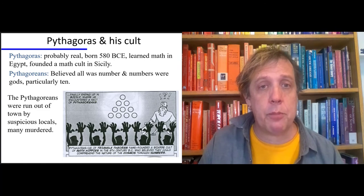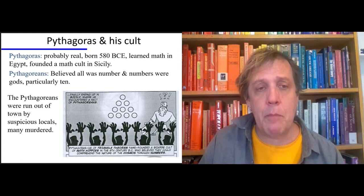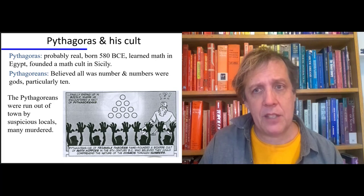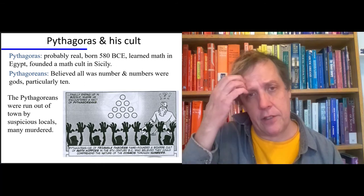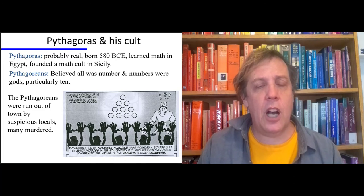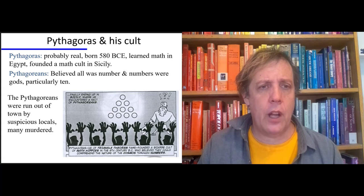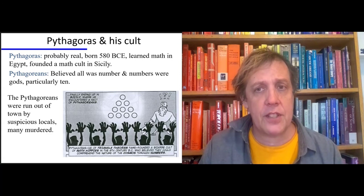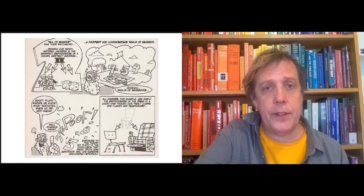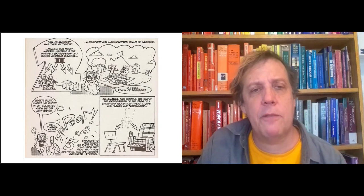Pythagoras was probably a real man. He was probably born about 580 BCE and learned math in Egypt. It's possible he might have learned math in Mesopotamia. Both the Egyptians and the Mesopotamians knew the Pythagorean theorem, but not in the form that the Pythagoreans later prove it in. So the Pythagoreans believed that all is number. Numbers are gods. This was weird, so they are run out of town by suspicious locals, and many of them are murdered. And they wind up, many of them wind up as refugees back in Athens.